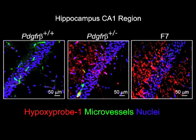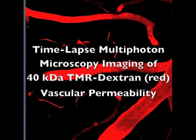Using a hypoxia probe imidazole, we confirmed that the reductions in cerebral microcirculation lead to severe hypoxic changes in the brains of PDGFR-receptor-beta heterozygous and F7 mice.